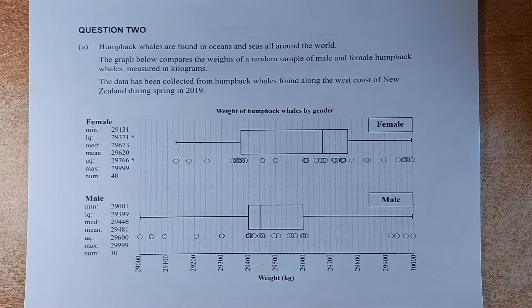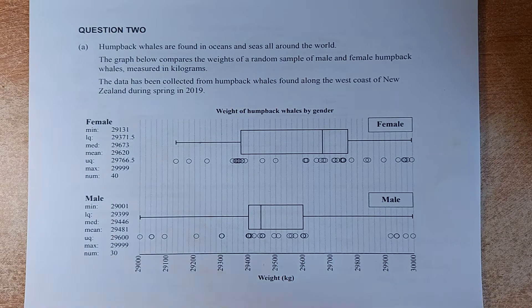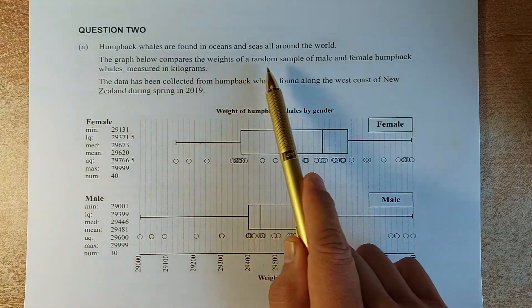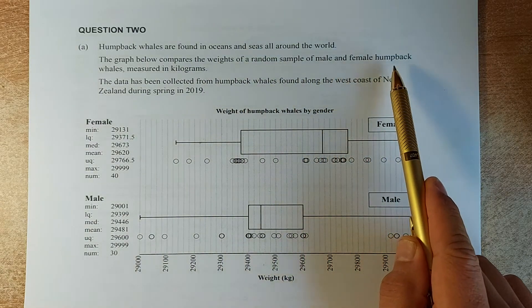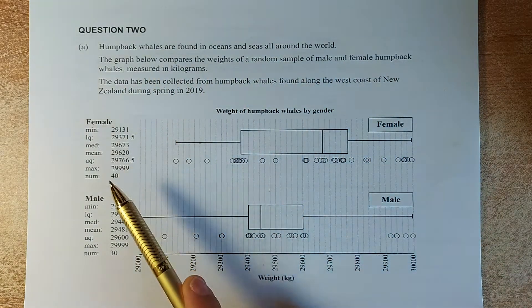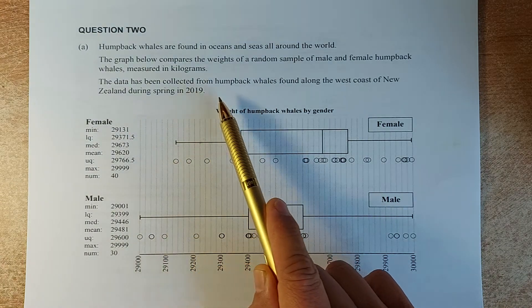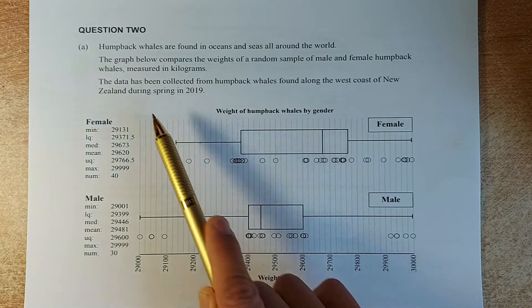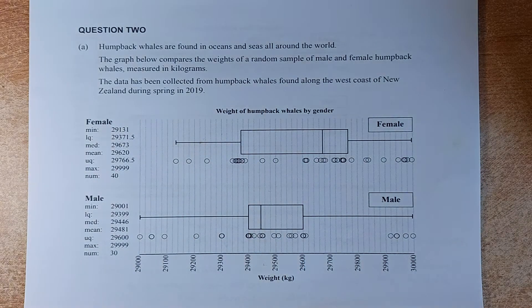So we shall read the first question, Question 2. Humpback whales are found in oceans and seas around the world. The graph compares the weight of a random sample of male and female humpback whales measured in kilograms. The data has been collected from humpback whales found on the west coast of New Zealand during spring in 2019.